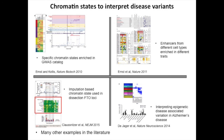These chromatin state annotations have been used previously to interpret disease-associated variation, as well as in recent work where chromatin impute annotations and ChromeHMM on top of it were used to dissect the FTO loci and interpret epigenetic variation associated with disease. There are many other examples in the literature by other researchers, either using existing annotations or applying ChromeHMM to their own data.